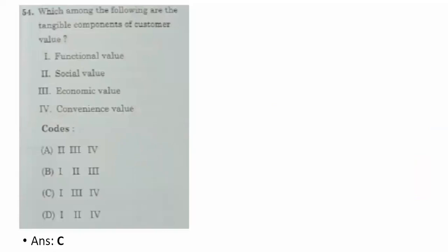Fifty-fourth question: which are the tangible components of customer value? Tangible components are those visible or felt by the customer. The correct option is C — one, three, and four: functional value (what function the product can perform), economic value (how much money is spent), and convenience value (the convenience obtained from using the product).